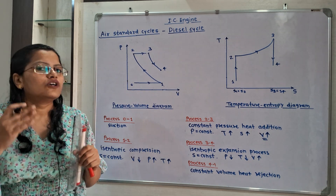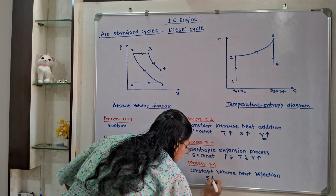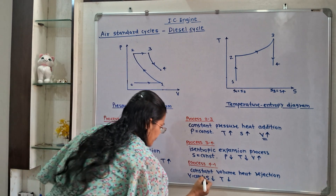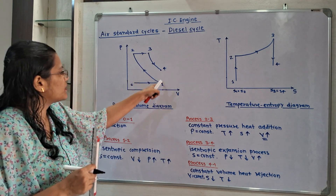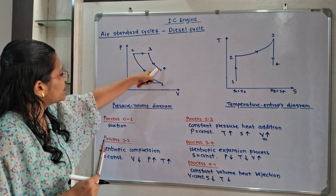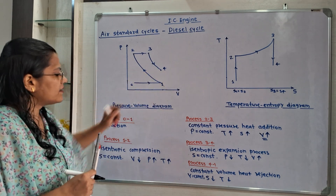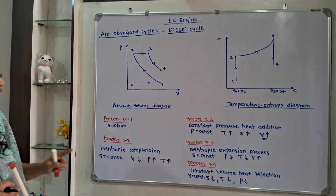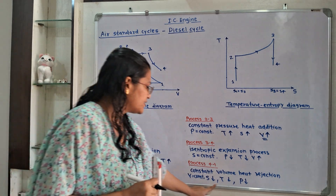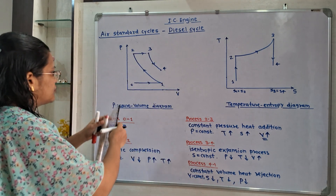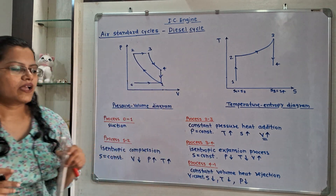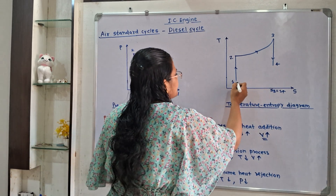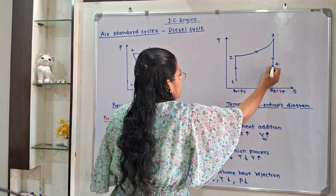Process 4 to 1 is constant volume heat rejection. Whenever the heat rejection process takes place, entropy decreases. Temperature decreases and volume remains constant. On the PV diagram, we draw a straight vertical line since volume is constant, and pressure decreases. For the T-S diagram, temperature decreases and entropy decreases. T4 is shown here and we connect the points accordingly.